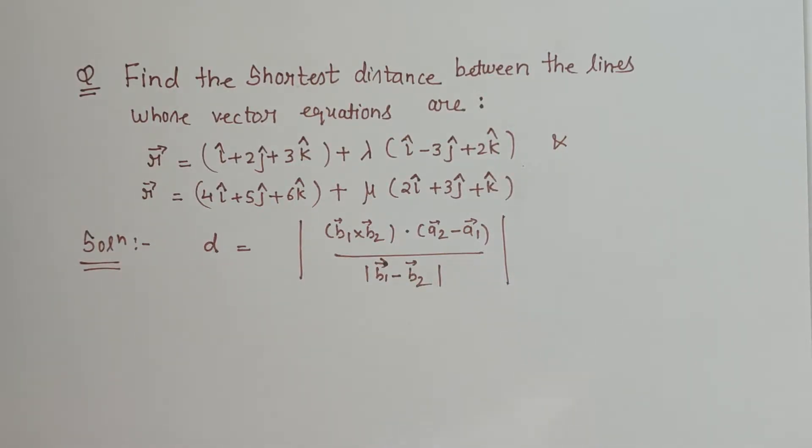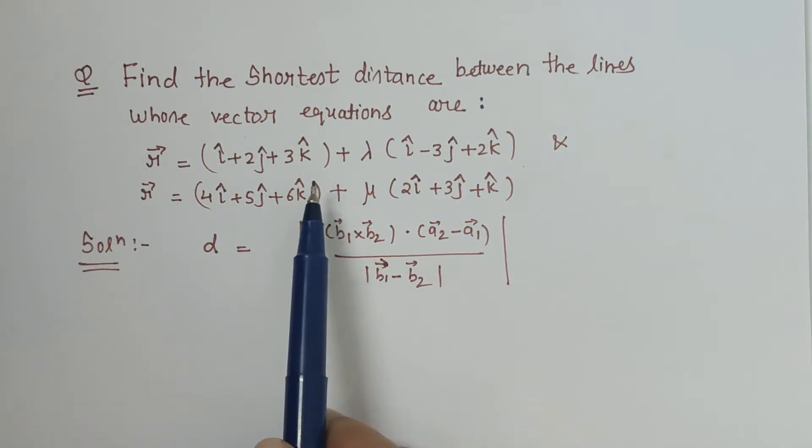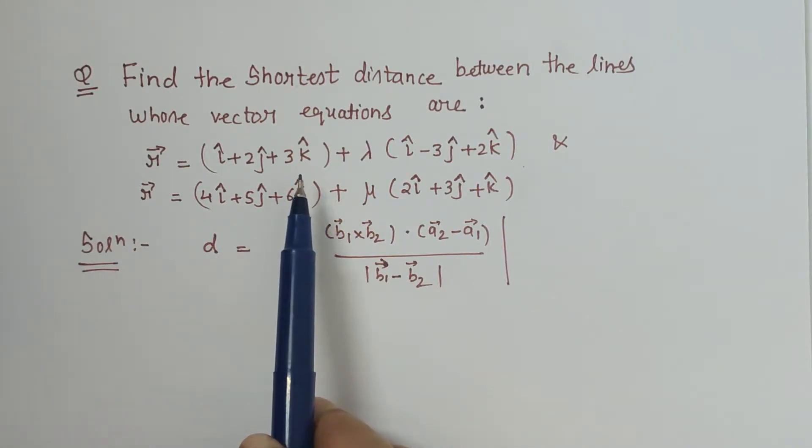Hello friends, in this video I am going to explain how we can find the shortest distance between the lines whose vector equations are given to us. So here we will first identify what is b1, what is b2, what is a1, what is a2 as per the formula given to us.